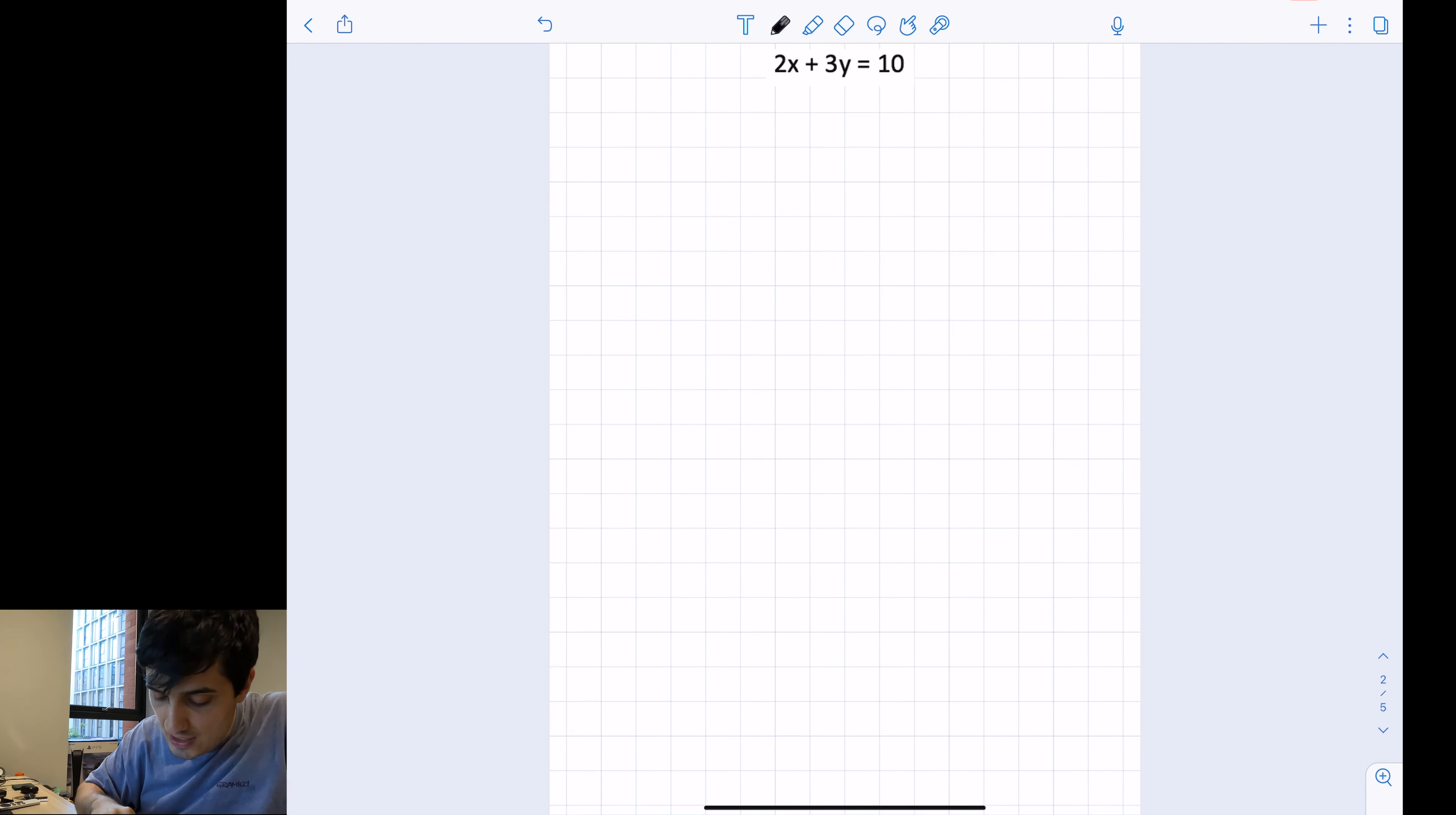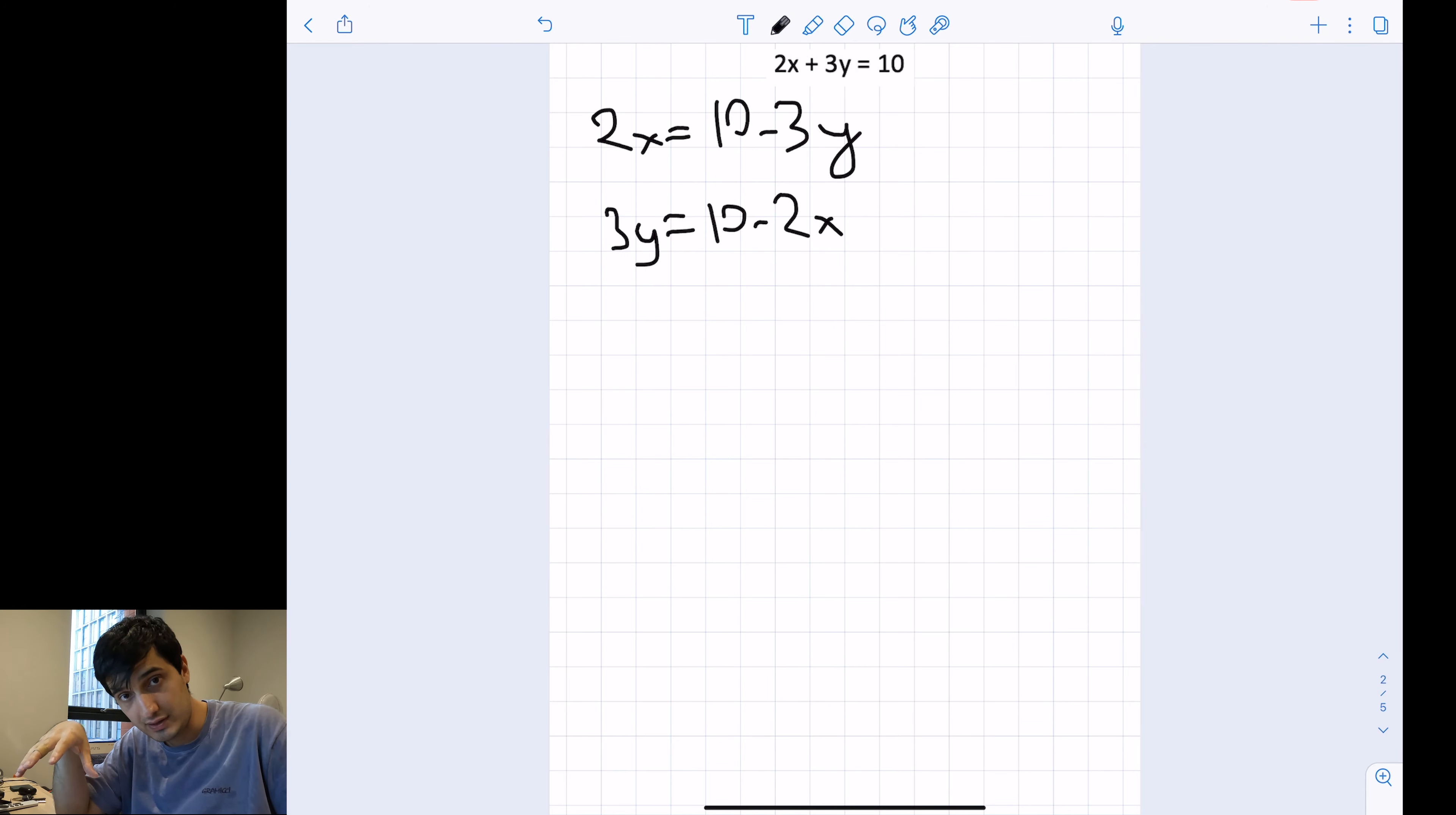What you can do here is you can say 2x will equal 10 minus 3y, or you can say 3y will equal 10 minus 2x. There can be ways that you can try to modify them, maybe even simpler than here.